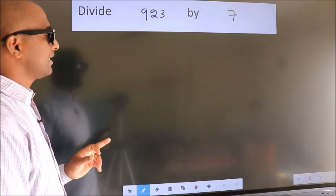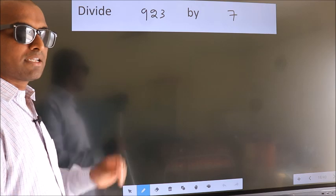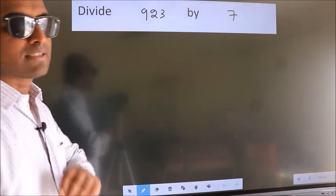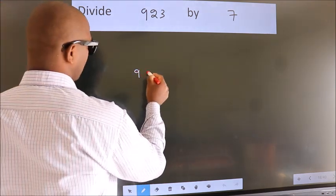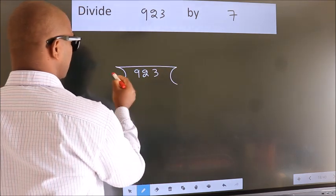Divide 923 by 7. To do this division, we should frame it in this way. 923 here, 7 here.